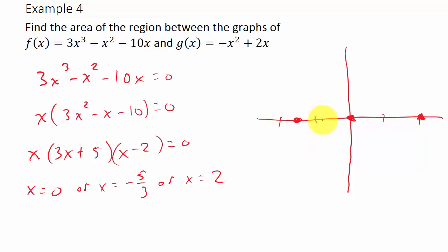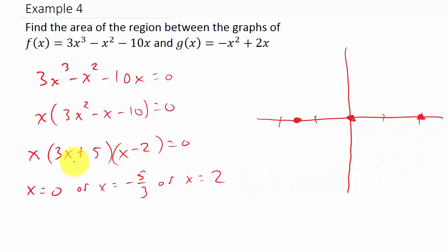Plugging in negative 1 gives negative 1, 2, and negative 3 — a negative times a negative is positive, so the graph is up there. Plugging in 1 gives a negative value, and plugging in 3 gives a positive value. So the graph of f of x looks something like this.